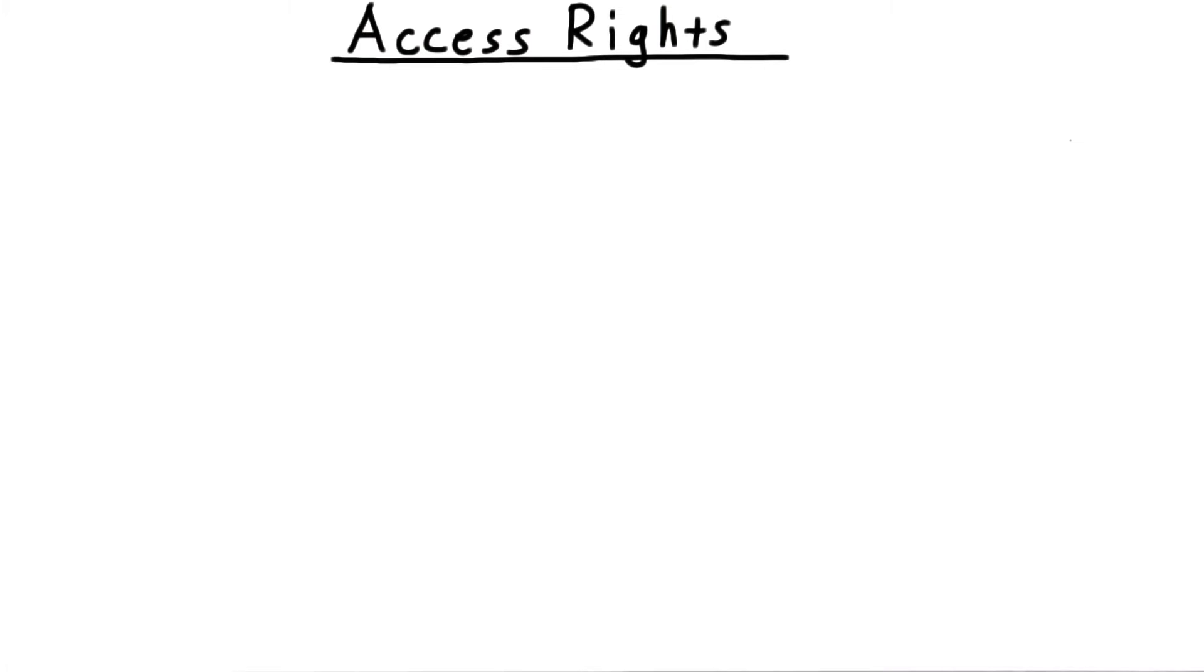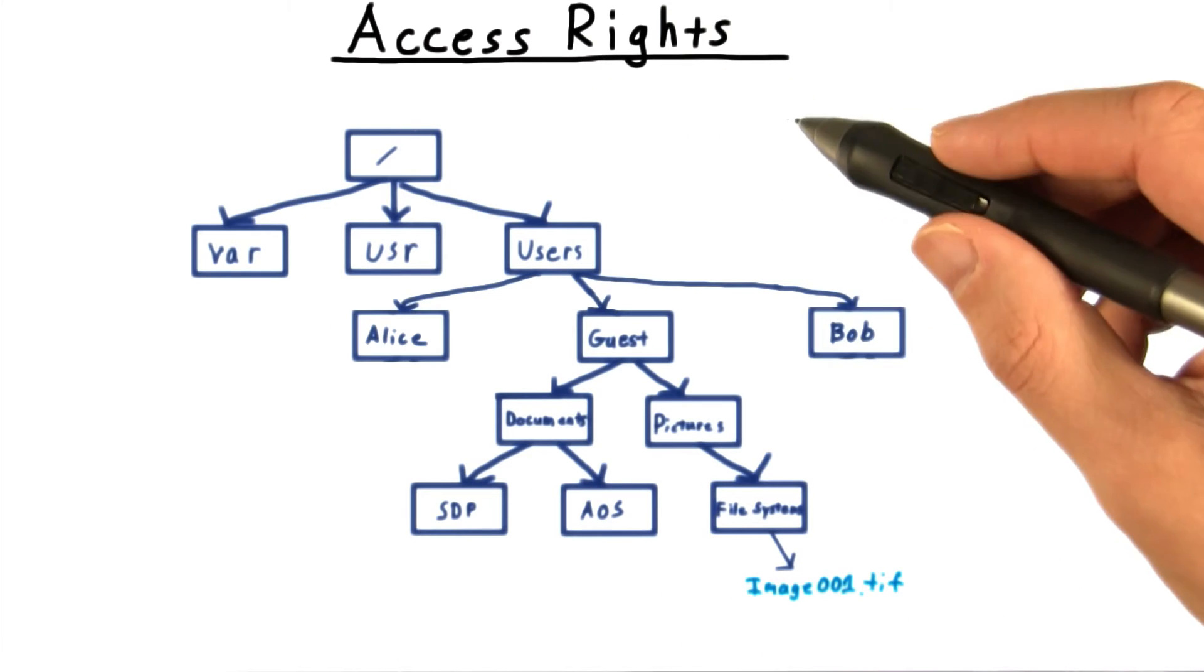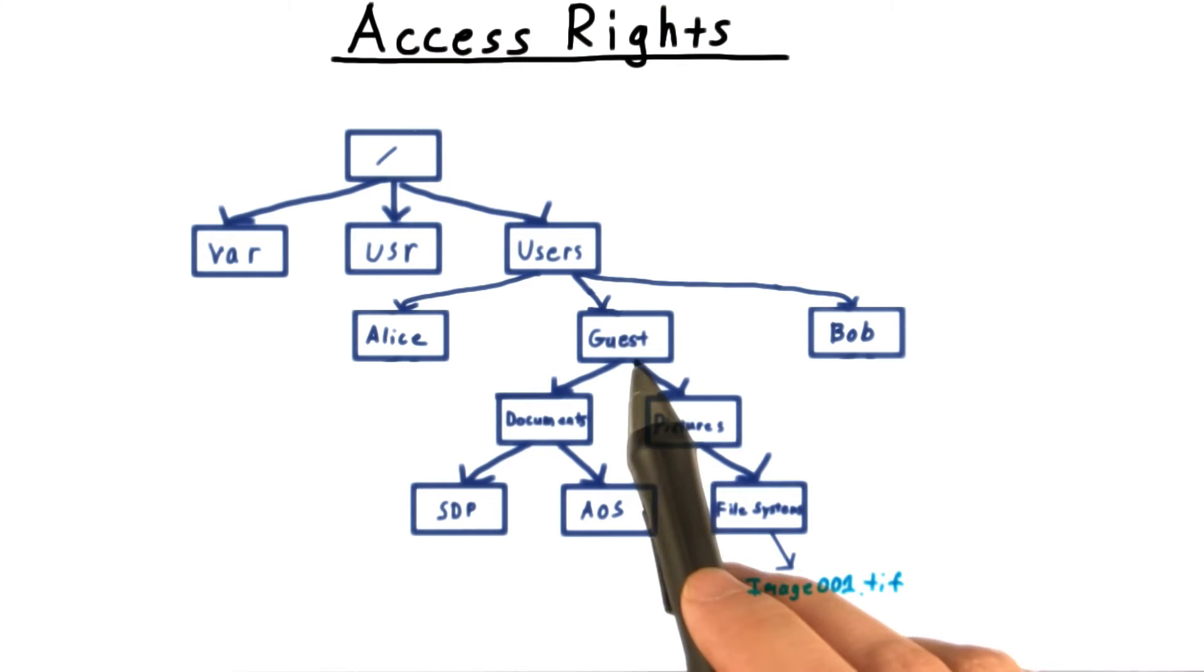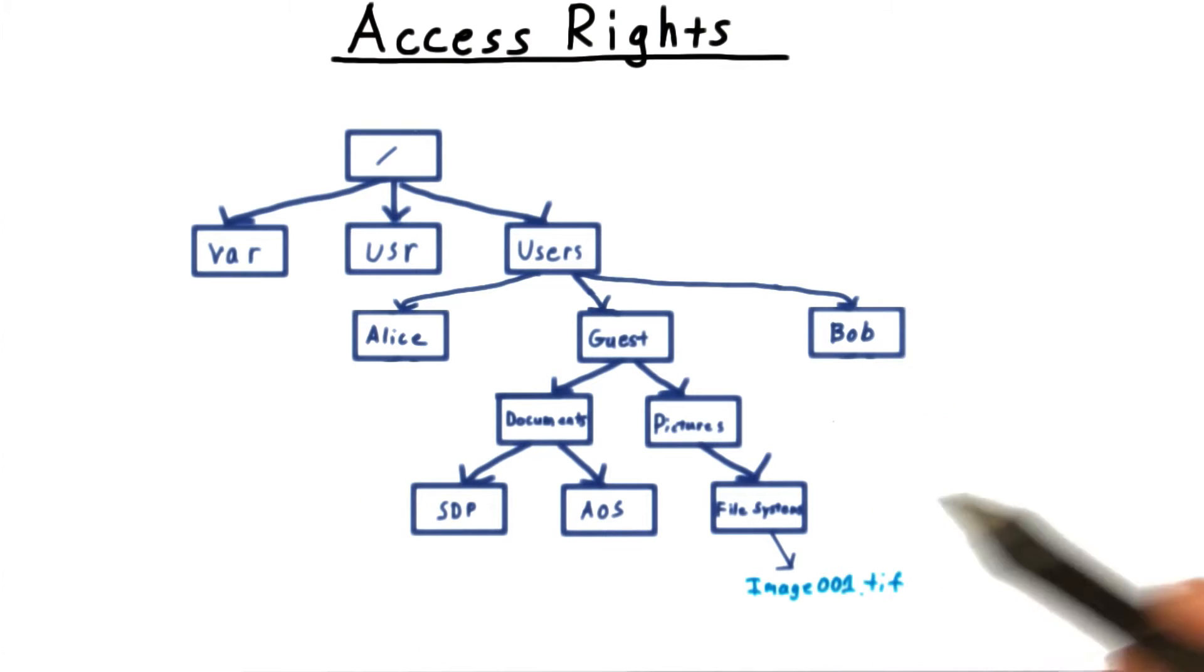As soon as one thinks about letting multiple users access a file system, it becomes clear that we will need some notion of access rights. Looking at our directory tree here again, it should be clear that Alice should not be able to see guests or Bob's files unless they say it's okay.